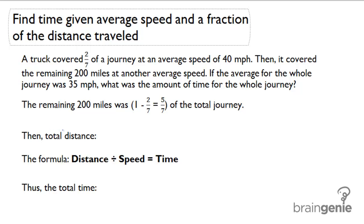First, we can figure out the remaining 200 miles was 1 minus 2 sevenths equals 5 sevenths of the journey.